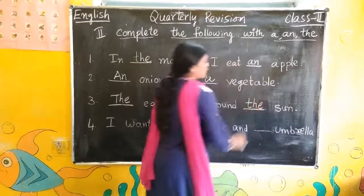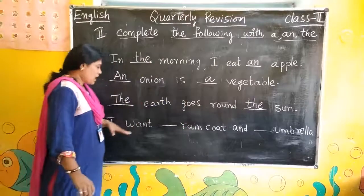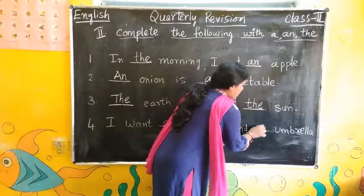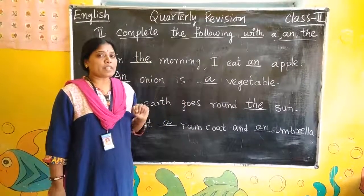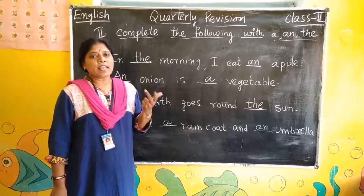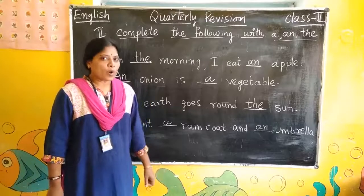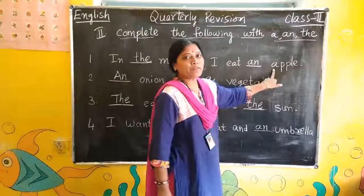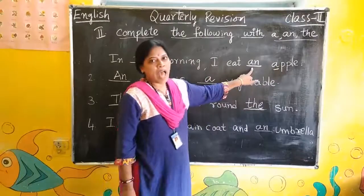I want a raincoat and an umbrella. The vowels are A, E, I, O, U — five vowels. The letter that starts with a vowel, we have to write 'an' before that word. If the letter is starting with A, so we write 'an' here.